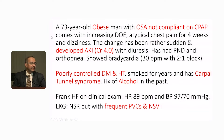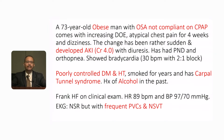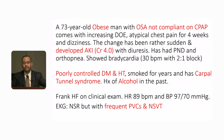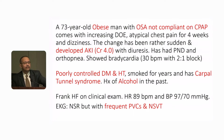It's a 73-year-old man who is overweight, who has obstructive sleep apnea, comes with shortness of breath, was given diuretics outside and he went into acute kidney injury. He also had some dizziness, was found to be in 2-1 block, poorly controlled diabetes, hypertension, carpal tunnel syndrome, history of alcohol in the past — but he swears he stopped it. And then he comes with frequent PVCs on the EKG.